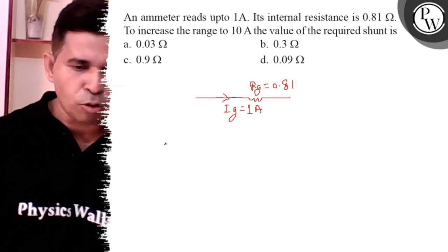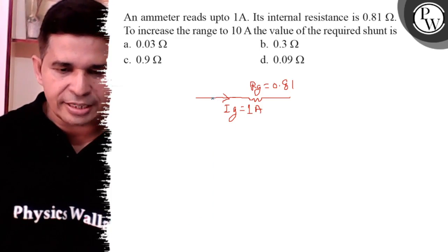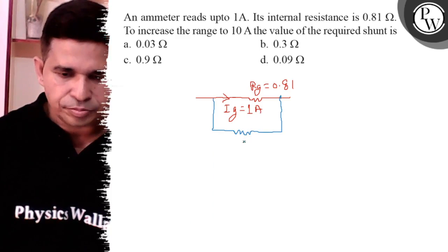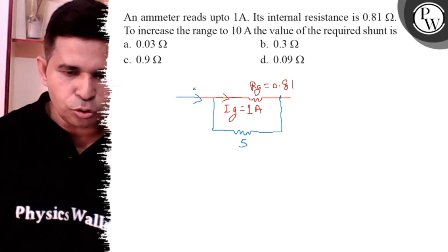Now shunt resistance is connected in parallel to it. It is the shunt resistance. So its range increases to 10 ampere.